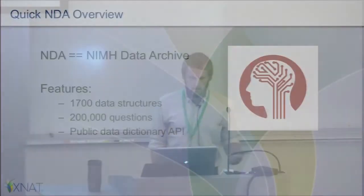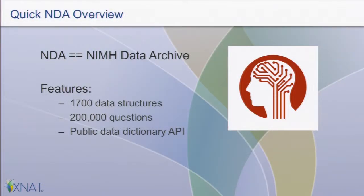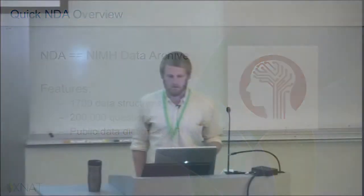They were formerly known as NDAR — the National Database for Autism Research — but now they generally cover any mental health data. With the CCF, they're willing to model just any kind of non-imaging data that we have. They currently have about 1,700 data structures, and they've got this public Data Dictionary API, which I'm utilizing to pull down and create XNAT XSDs.